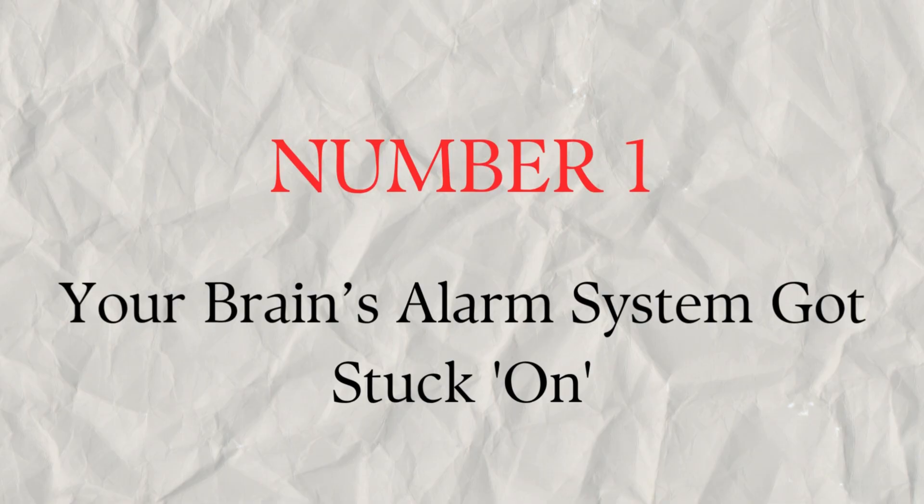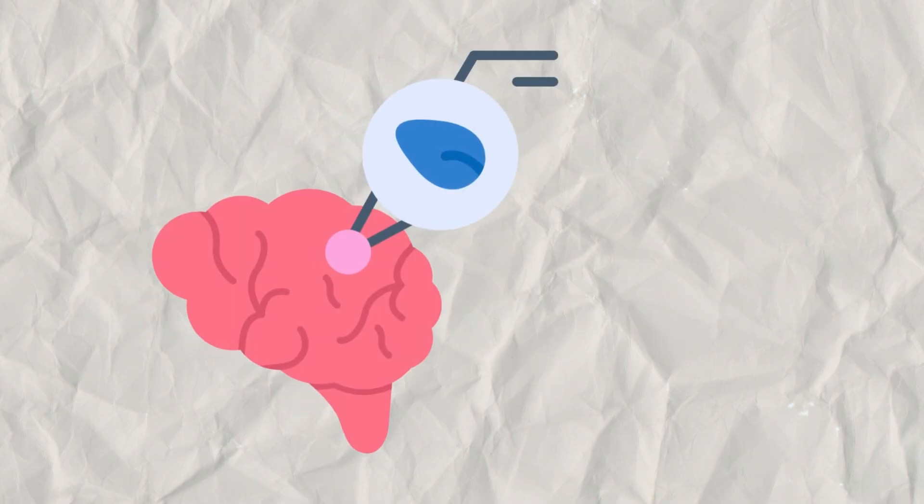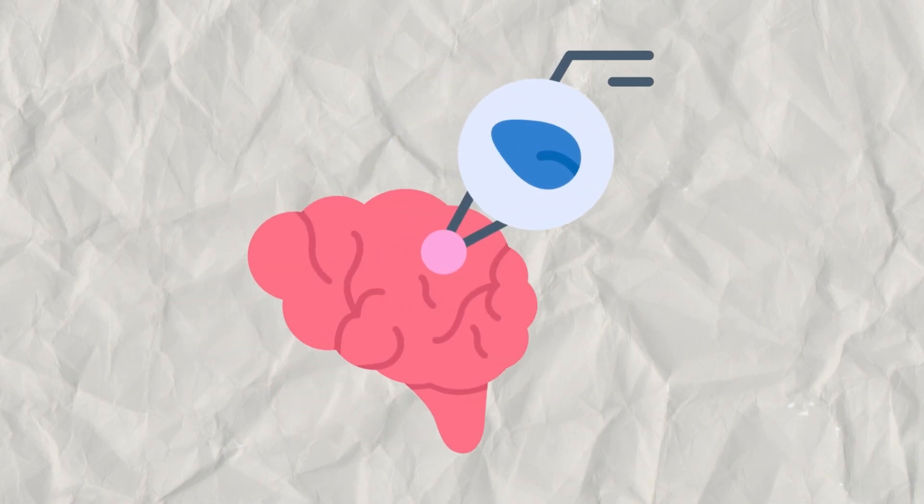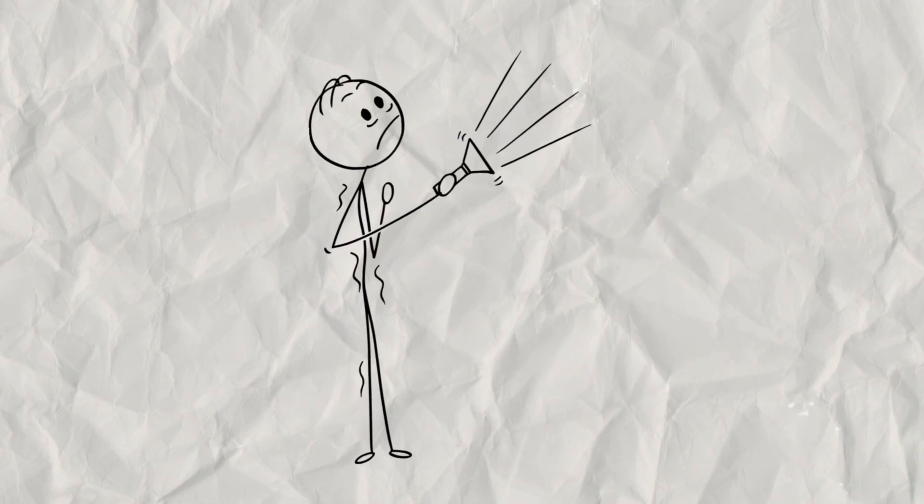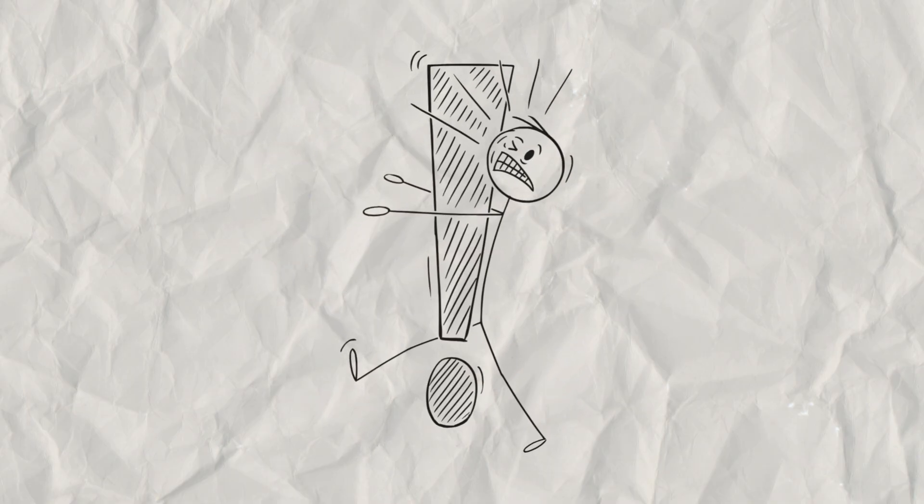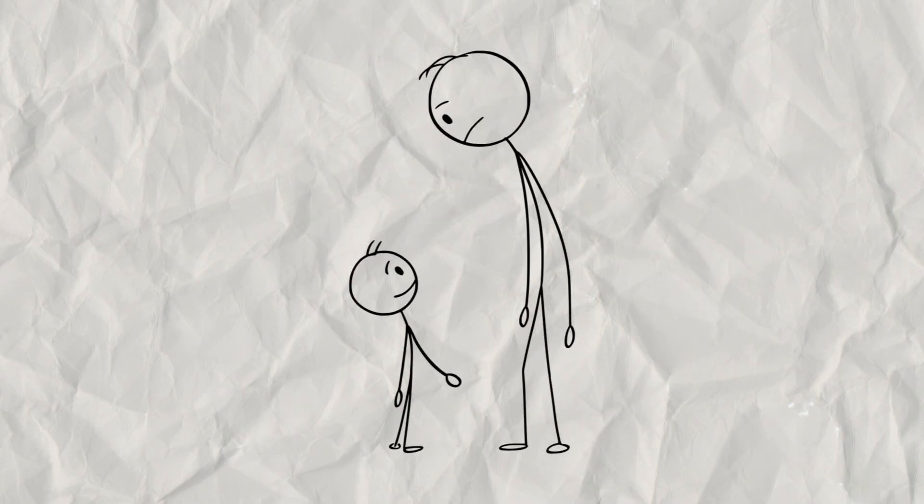Number one, your brain's alarm system got stuck on. Inside your brain, there's a small, almond-shaped structure called the amygdala. Think of it as your body's smoke detector. Its job is to scan for danger, and when it finds it, sound the alarm. For a child in a safe home, this alarm goes off when it's supposed to.